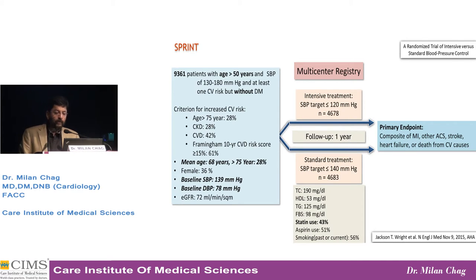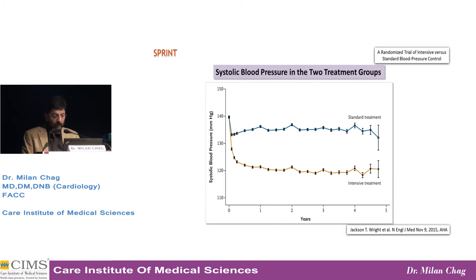The primary endpoint was a composite of MI, other acute coronary syndrome, stroke, heart failure, or death from cardiovascular causes. Systolic BP in the intensive treatment group was just around 120 at the end of the study, while it was less than 140 in the standard care group.